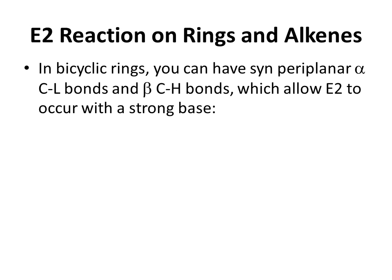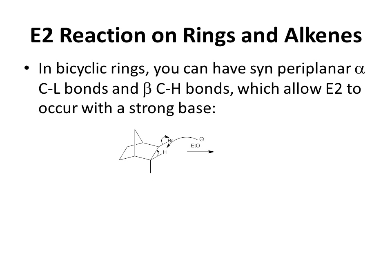In bicyclic rings, because of their rigidity, you can have syn-paraplanar alpha-carbon to leaving group bonds and beta-carbon to hydrogen bonds, which allow E2 to occur with a strong base. In the example shown, there is an alpha-carbon to bromine bond and a beta-carbon to hydrogen bond which are syn-paraplanar — the C–Br bond and the C–H bond occupy the same plane and point in the same direction. The tert-butoxide acts as the strong base, and you get an E2 reaction generating an alkene.